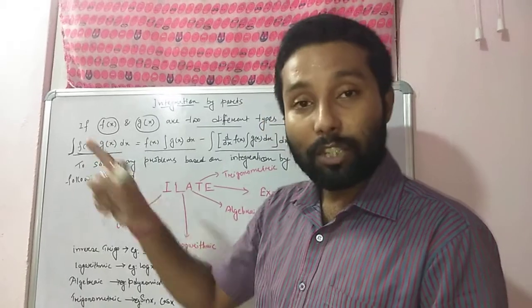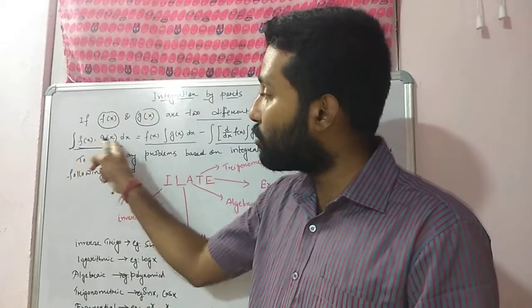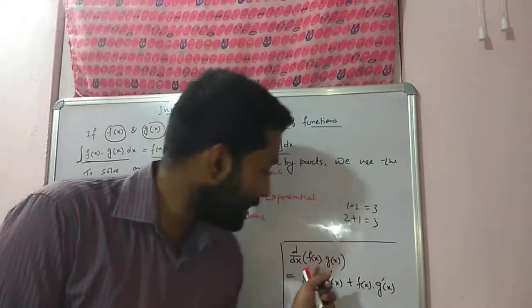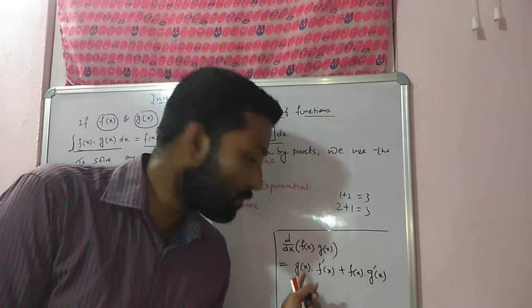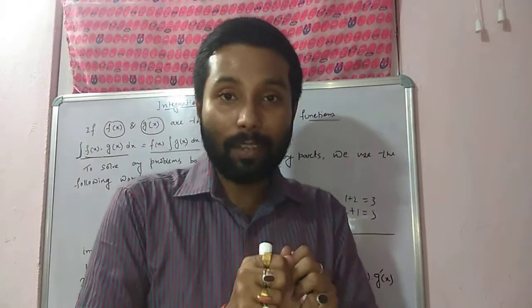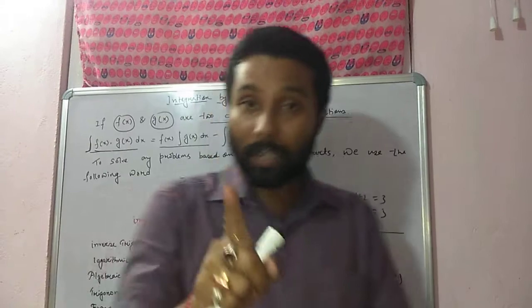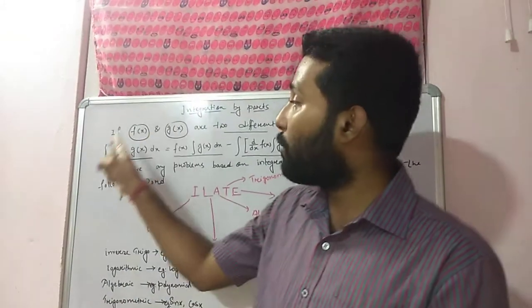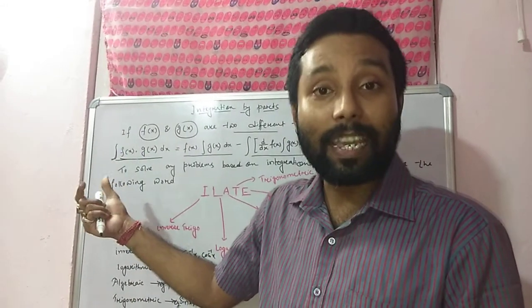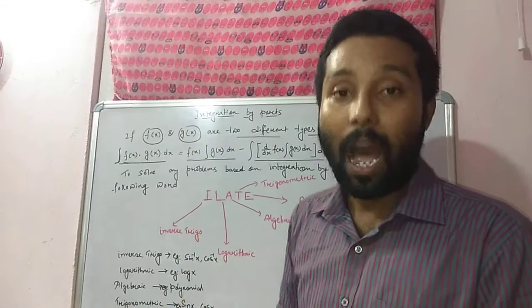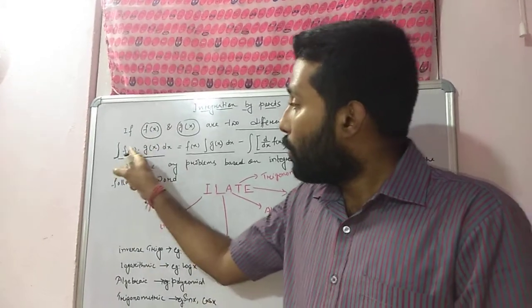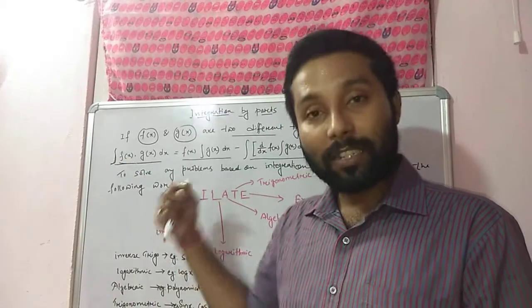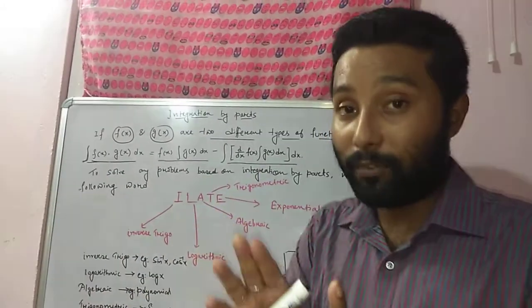Here also, f(x) and g(x) are two different functions, and in between these two functions the sign is multiplication. In differentiation, there was no need to select which is the first function and which is the second, but in integration that is necessary. How do we identify which one is the first function and which one is the second function in case of integration by parts?